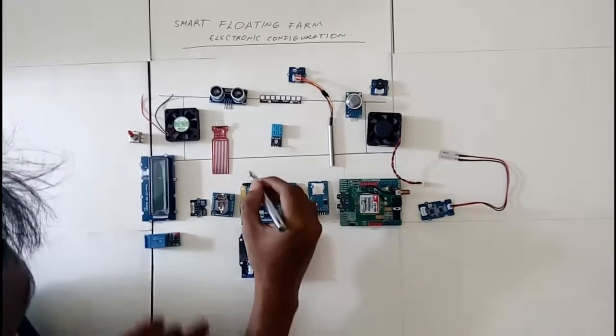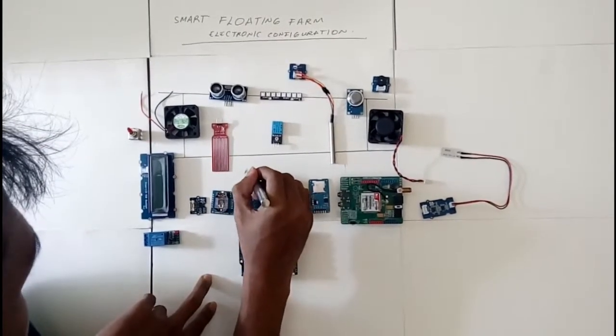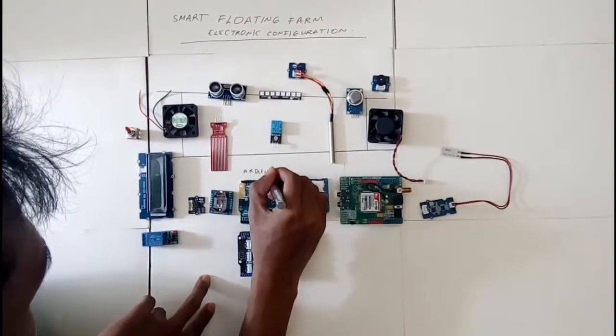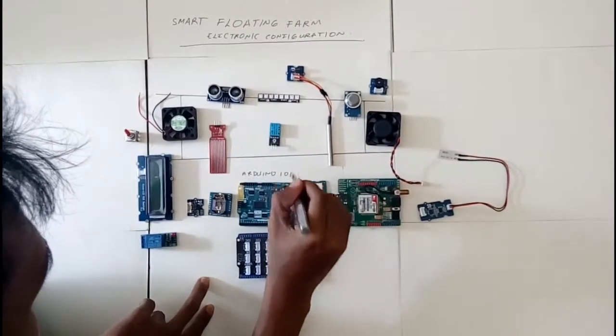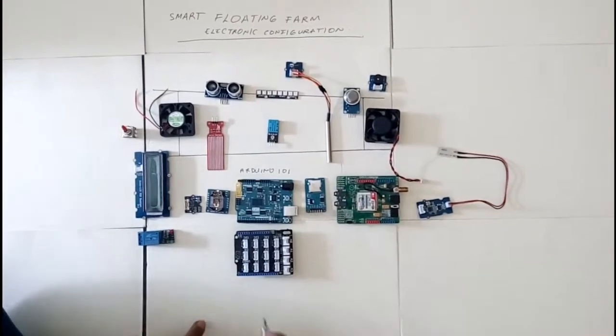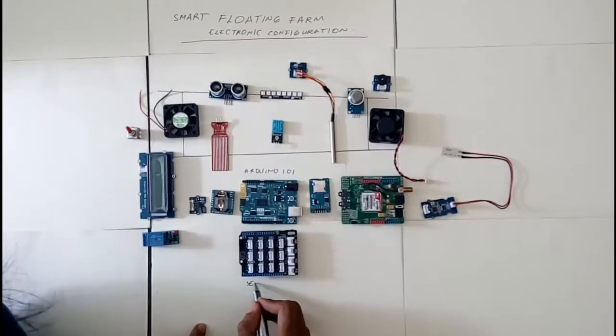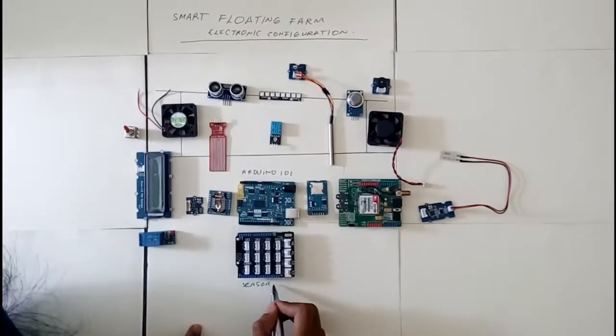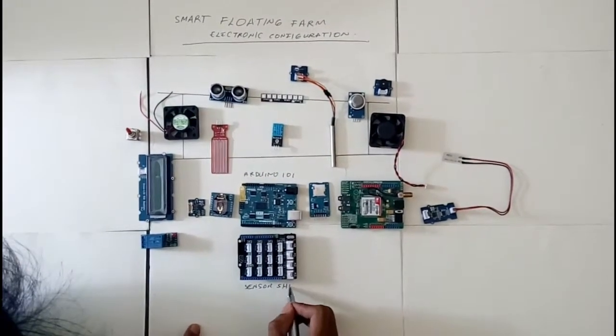Here is the Arduino 101, the main microcontroller, and then we have a Groove shield. This is a sensor shield that will connect the sensors to the Arduino 101.